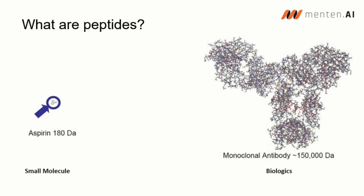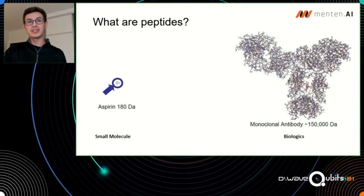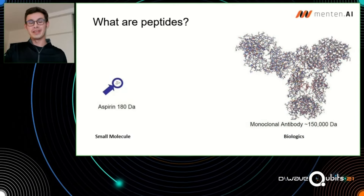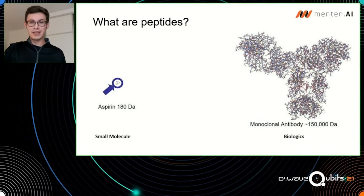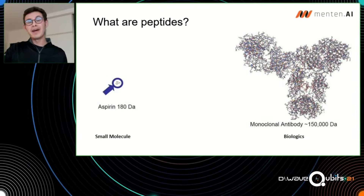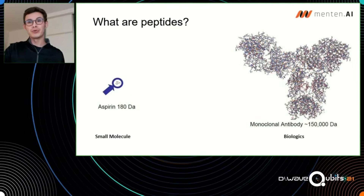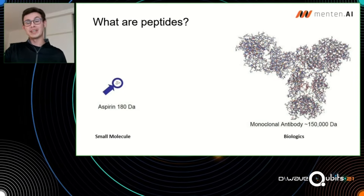Both have specific use cases. Small molecules have a number of advantages — they are great in the sense that they can go into cells and are very cheap to manufacture. But one of the challenges is that because they're so small, they can actually bind to pretty much anything in your body, so the levels of toxicity can be pretty high. That is part of the challenge why it's so hard to get a small molecule approved as a drug.